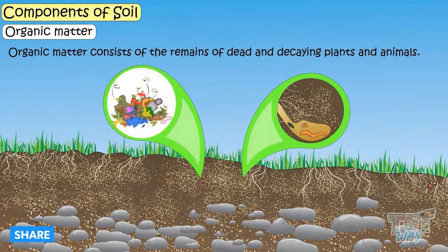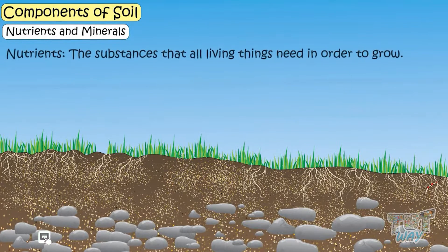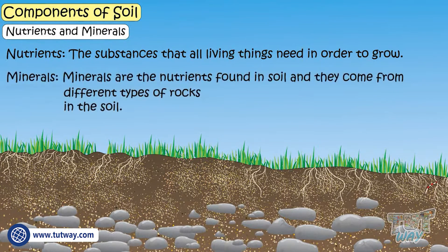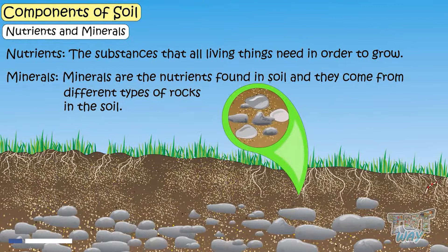Then there are nutrients and minerals. Nutrients are substances that all living things need in order to grow. And minerals are the nutrients found in soil, and they come from the different types of rocks in soil.